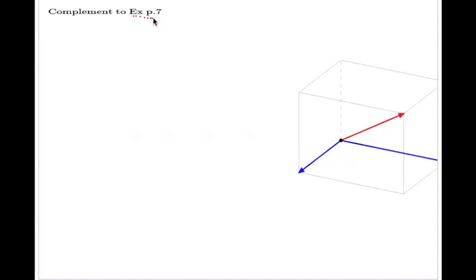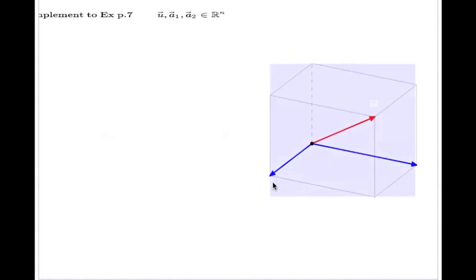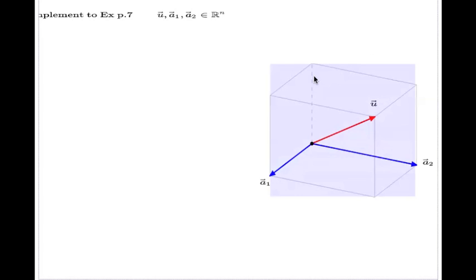So it's an example on page 7, the very last one at the bottom of the page. On that page you're given three vectors u, a1, and a2. I keep the notation of the example. I have this diagram: here's a vector a1, here's a vector a2, here's a vector u. I conveniently put this into a box just to help the perception of 3D space.